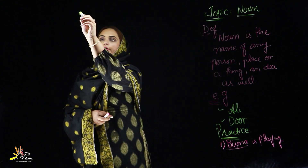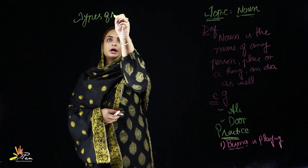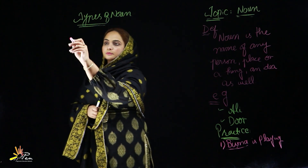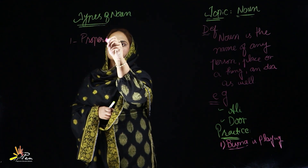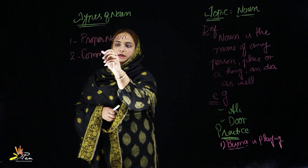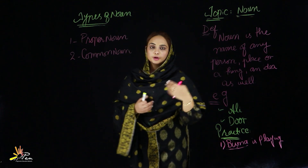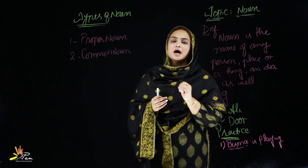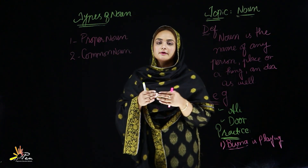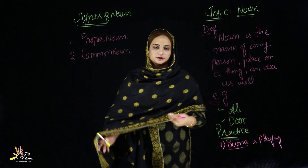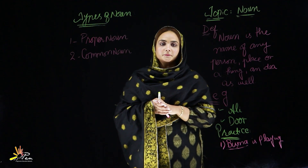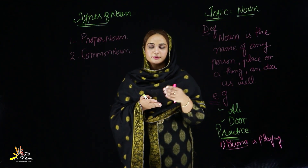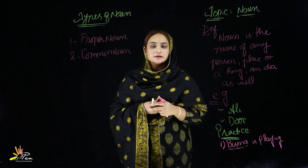Now I will tell you about the types of noun. How many types of noun are there? Noun ki kitni aqsaam hain? Noun can be a proper noun or a common noun. What do you mean by proper noun? Proper noun ka matlab hai koi bhi particular, specific naam ho ga. Do you know Quaid-e-Azam Muhammad Ali Jinnah? Quaid-e-Azam is a specific particular name of a person, so it will be included in a proper noun.